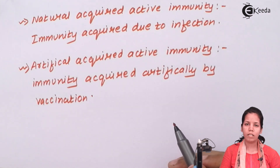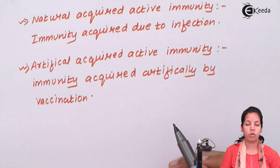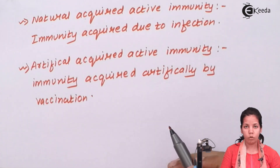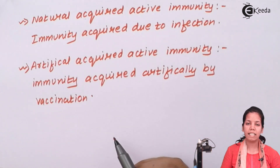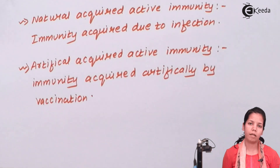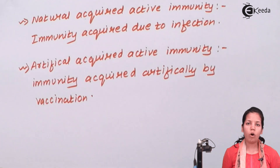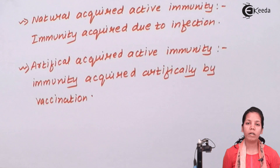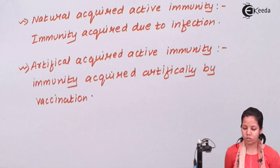Once you have got chickenpox, the antigenic reactions of that organism produce antibodies inside your body. Those antibodies precisely try and kill those organisms and are stored as a memory for the next time. So if that pathogen invades your body for the second time, the antibodies formed during the first reaction will try and kill them. That is an immunity developed during infection.